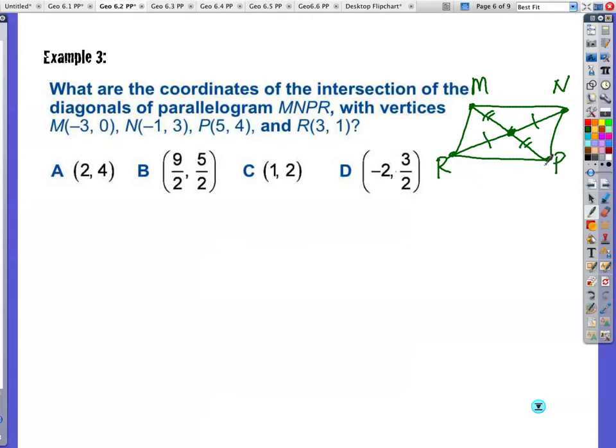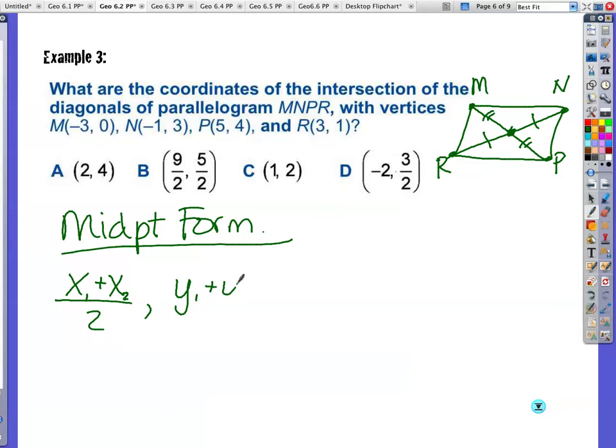We learned it way back when we learned the distance formula for the first time. Midpoint formula. It's probably like forgotten a little bit. Let's review that. X1 plus X2 divided by 2. And then you do the same thing with the y's. Basically I just think add your y's together divide by 2. Add your x's together divide by 2. So if that's the case. And here's the other kicker with this problem. You've got to find basically these two endpoints. So M to P. Don't do M to N. It's M to P is your diagonal. So I'm going to take my x values. I'm going to take 5 plus negative 3 divided by 2. Take my y values. Which would be 4 plus 0 divided by 2. This becomes 2 over 2. This becomes 4 over 2. Reduce again. You have 1, 2.